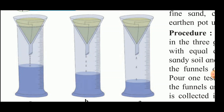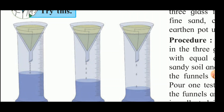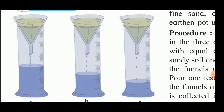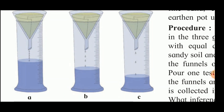We observe that the level of water collected in the first measuring cylinder — where sand is placed in the funnel — is the highest. The level in the second cylinder is less compared to the first. From this we can infer that water seeps easily through sand, so its water-holding capacity is less and most water falls into the cylinder. The water-holding capacity of sandy soil is more than that of sand, so it holds some water and the remaining goes into the cylinder.